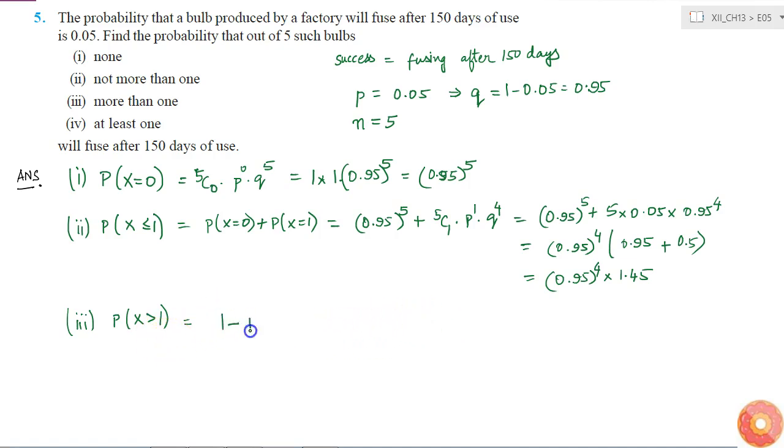I can simply write as 1 minus probability of x less than or equal to 1. Because if I consider x less than or equal to 1 and I consider x greater than 1, the sum of those will consider all possible cases. So that probability will be 1. So this will be equal to 1 minus the answer we got here, which is 0.95 to the power 4 into 1.45.